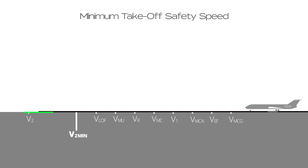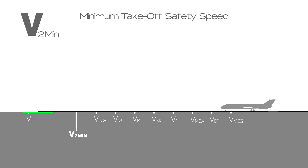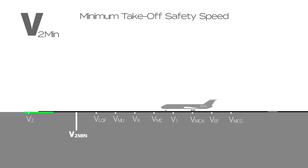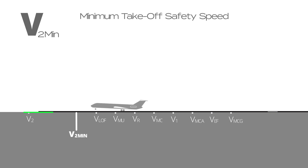Minimum takeoff safety speed is represented by V2 MIN. This speed is usually 1.2 times the stall speed in the takeoff configuration.